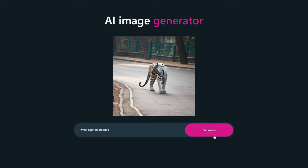So we will create this AI image generator step by step using the OpenAI API in React.js. Let's start this tutorial.